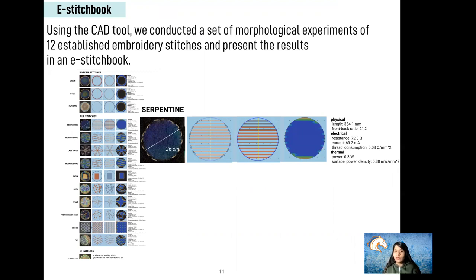For example, if someone wants to achieve color changes over a large area, a serpentine stitch will be useful. We provide more examples of how to use these stitches in the stitch book through exemplar artifacts, and I will now go through one of these exemplar artifacts.